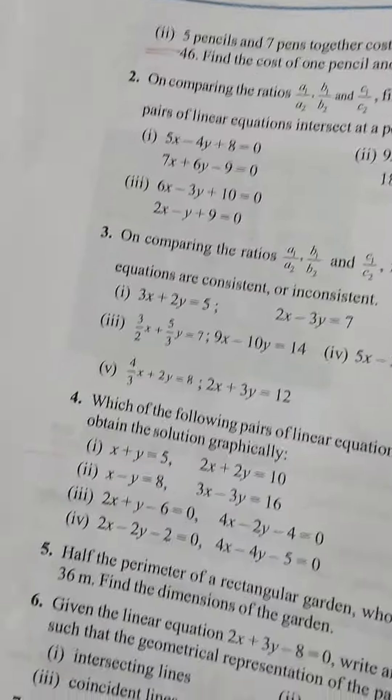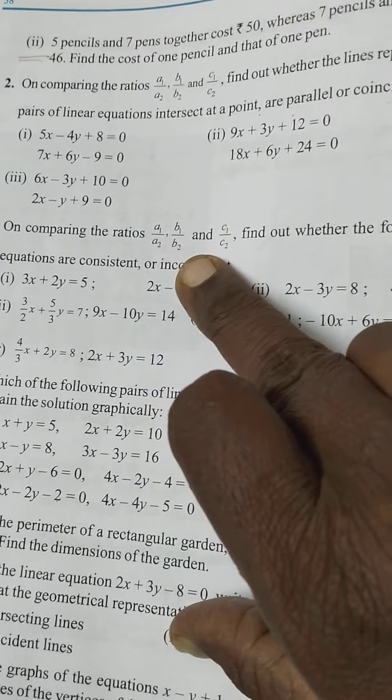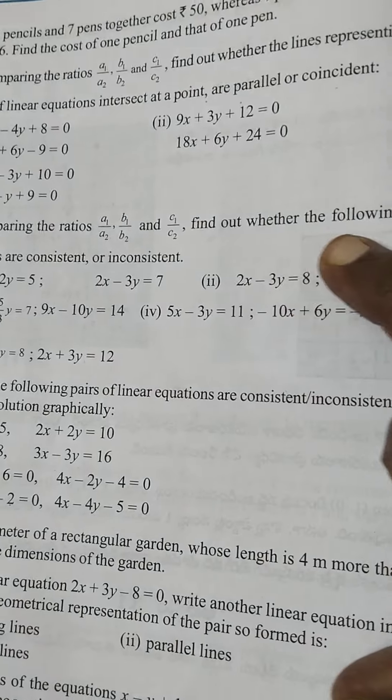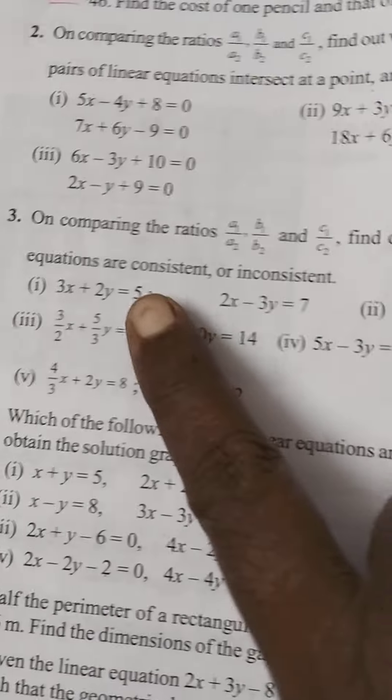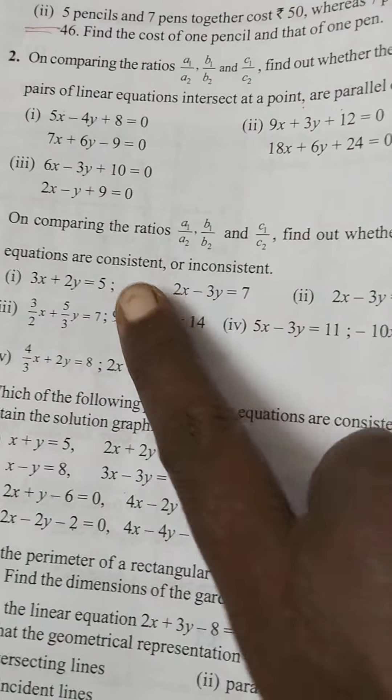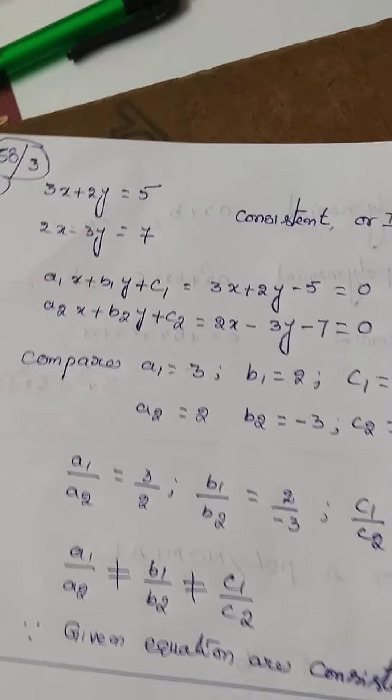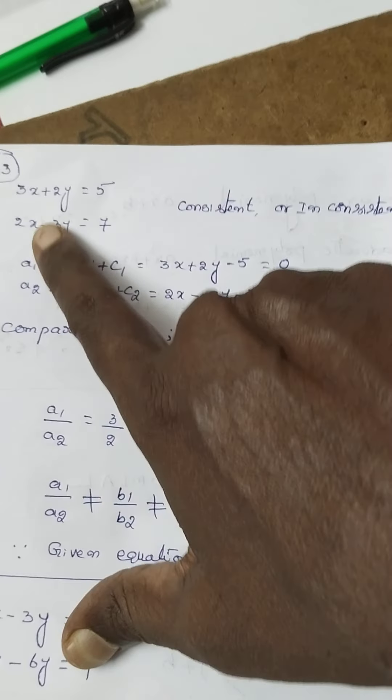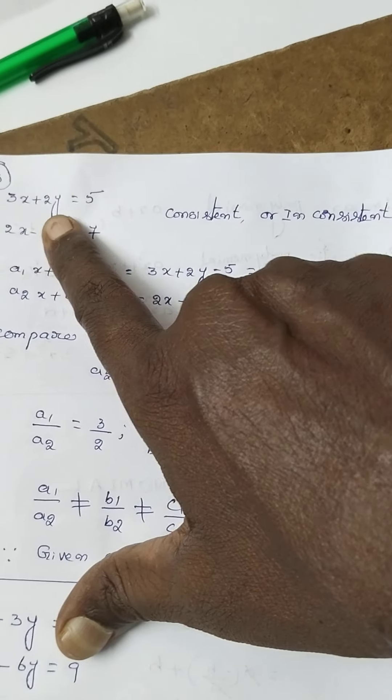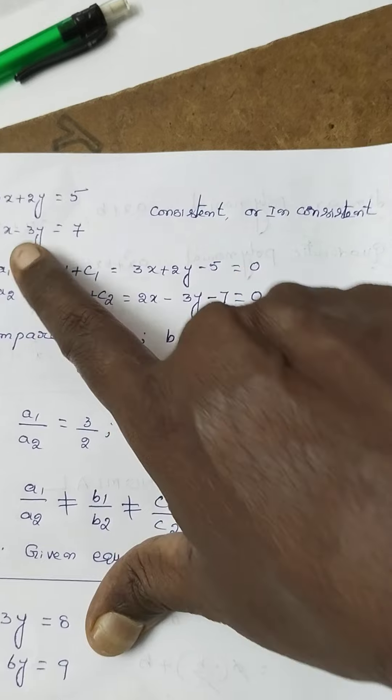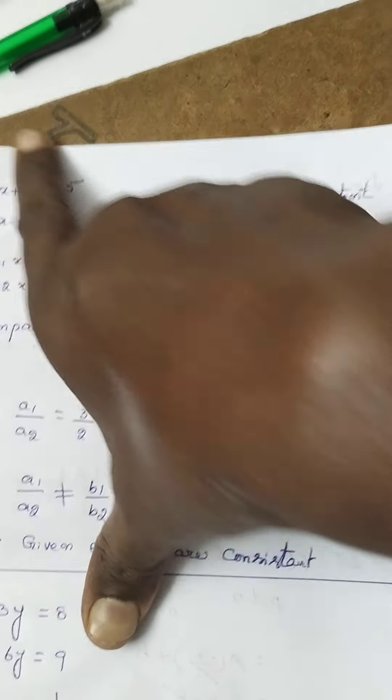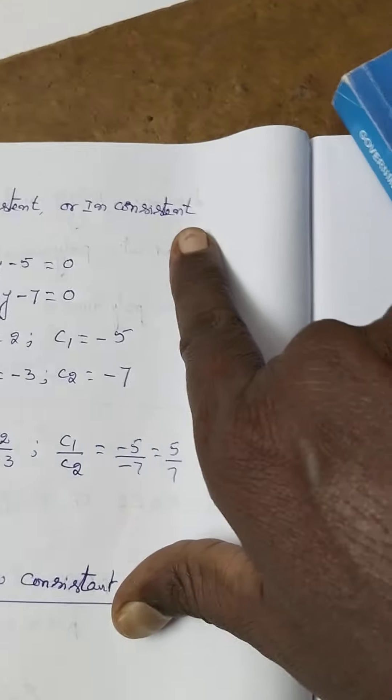See this one here. On comparing the ratio of A1 by A2, B1 by B2 and C1 by C2, find whether the following pair of linear equations are consistent or inconsistent. So, first we have to take the equations, page number 50, third problem, first one. 3x plus 2y is equal to 5, 2x minus 3y is equal to 7, this was the given equation, consistent or inconsistent.